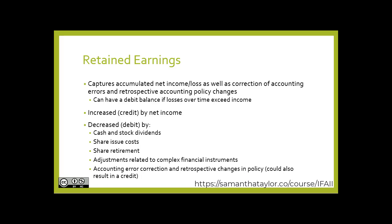We increase retained earnings by crediting it for net income, and we decrease it for a number of items, which can include cash and stock dividends, share issuance costs, share retirement, adjustments related to complex financial instruments, and accounting error correction and retrospective changes in policy. This also could result in a credit, it should be noted.